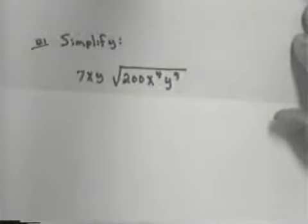Let's look at another one. Let's simplify 7xy times the square root of 200x to the 4th, y to the 9th.